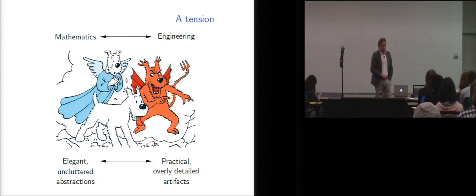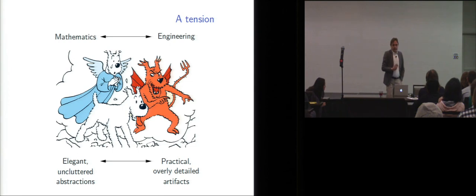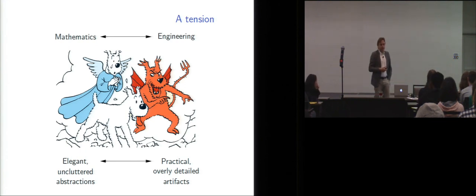And that leads to a bit of a tension in computer science, basically, between elegant mathematics on the one hand and engineering on the other hand. So like poor Milou in this picture, you may be torn between, on the one hand, elegant, uncluttered mathematical abstractions where you can do nice mathematics. And who could object to that, right? And on the other hand, doing things that are more practical, more closer to actual practice of programming. And in general, that leads to artifacts that are a lot more complicated and sometimes overly detailed.